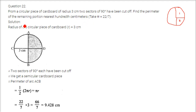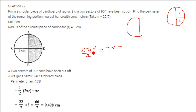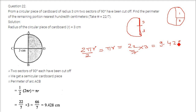We need to find the perimeter of the remaining portion. The perimeter consists of the curved arc and the straight diameter. The semicircular arc length is half of 2πr, which is πr = (22/7) × 3 = 9.428 cm. We must also add the diameter: radius is 3 on each side, so diameter = 6. Therefore, perimeter = 6 + 9.428 = 15.428 cm.